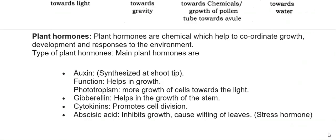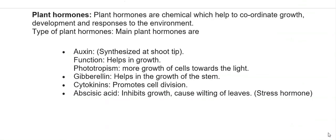Plant hormones are chemicals that help coordinate growth, development, and responses to the environment. Main plant hormones include: Auxin, synthesized at the shoot tip, helps in growth and causes more growth of cells away from light (phototropism). Gibberellin helps in the growth of the stem. Cytokinin promotes cell division. Abscisic acid inhibits growth and causes wilting of leaves; it is also called the stress hormone.